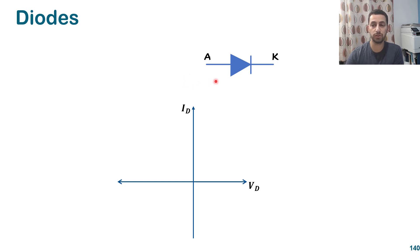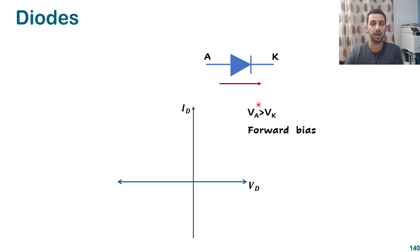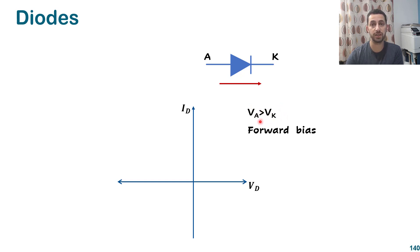What is the diode? The diode is a component which passes the current in one direction. It has two terminals which are the anode and the cathode, and they have some IV curve characteristics. The current goes from the anode to the cathode if the voltage at the anode is more than the voltage at the cathode, and this is the condition for switching it on. We call that condition forward bias operation.